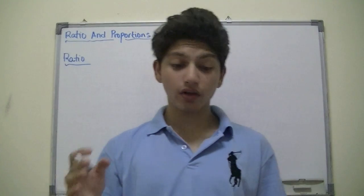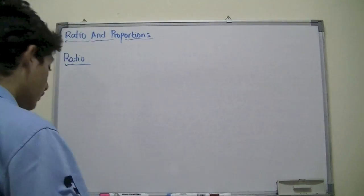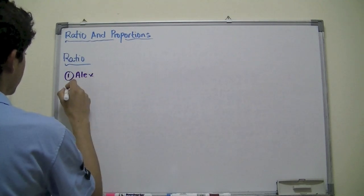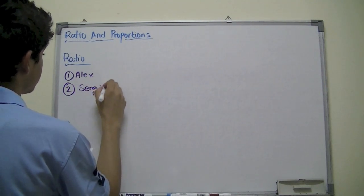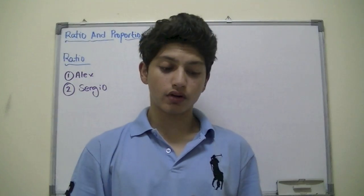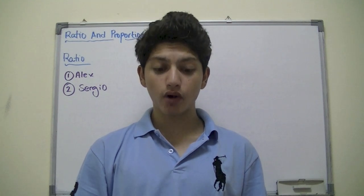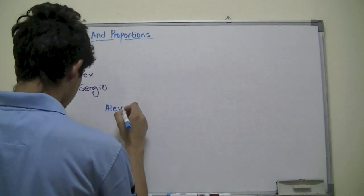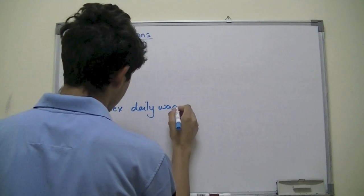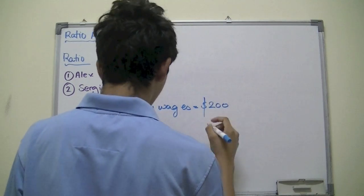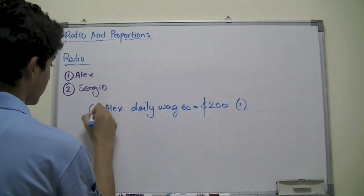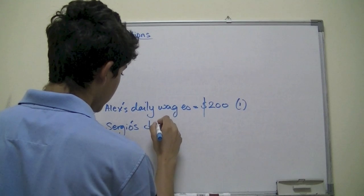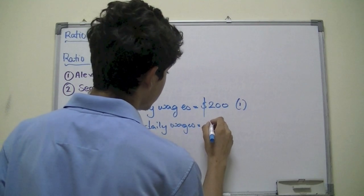Let's start off this topic with a simple example. Let's say two people — the first person was Alex, the second one was Sergio. It says that Alex and Sergio's daily wages are $200 and $100. So Alex's daily wages is equal to $200, and Sergio's daily wages is equal to $100.